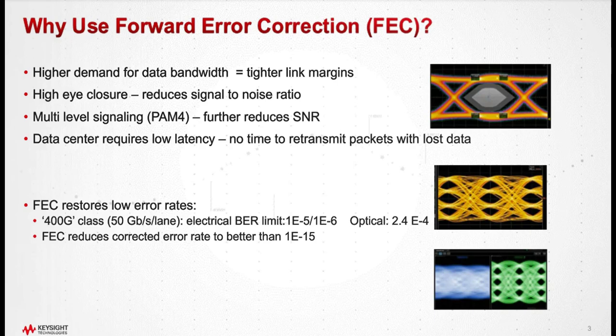And that's where the first word in forward error correction — forward — comes from. We're actually going to send the data in advance with the payload data, so that if correction is needed on the receiving end, all that information is right there, so we don't have to retransmit the data. FEC really allows us to operate at much lower error rates than where we used to, which we need to do because of these tight link margins in order to get the bandwidth.